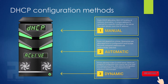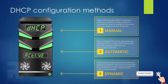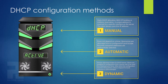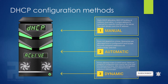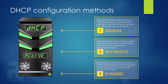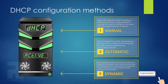DHCP support for manual allocation is also called static DHCP allocation or MAC address to IP address binding. It is done by binding the MAC address of the specific interface to the IP address required. This ensures that the configured IP address is reserved only for this interface. Static DHCP is also called IP reservation, and IP addresses obtained from the server are fixed and permanent.